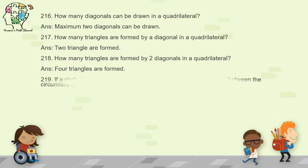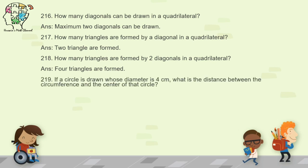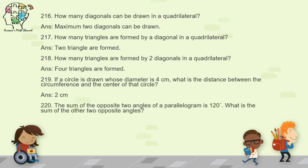Question 219: a circle is drawn with diameter 4 centimeters — what is the distance between the circumference and the center? This is asking for the radius. The distance between the circumference (the wall of the circle) and the center is called the radius. Since diameter is 4 centimeters, the radius is 2 centimeters.